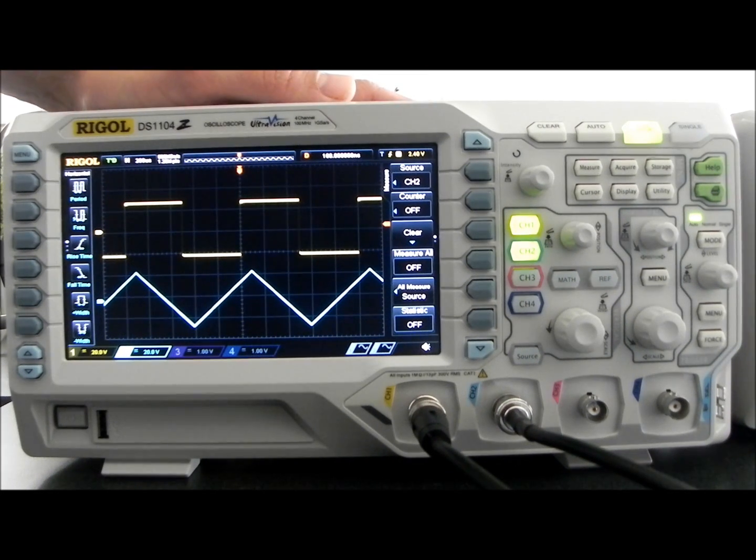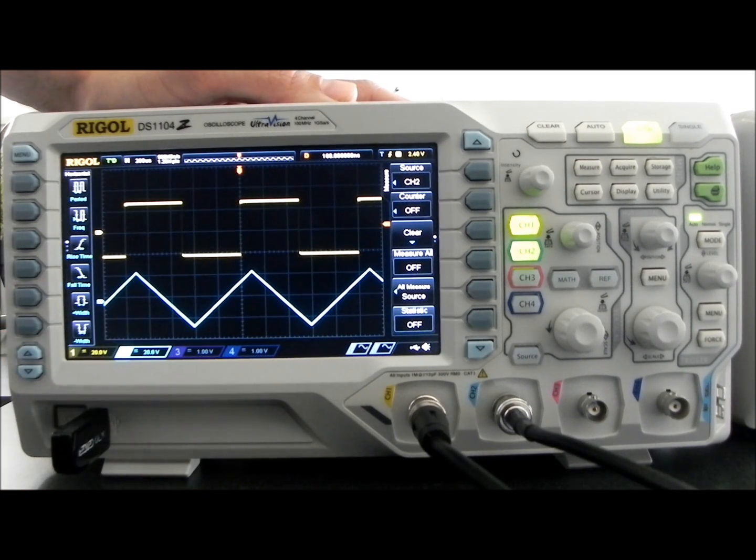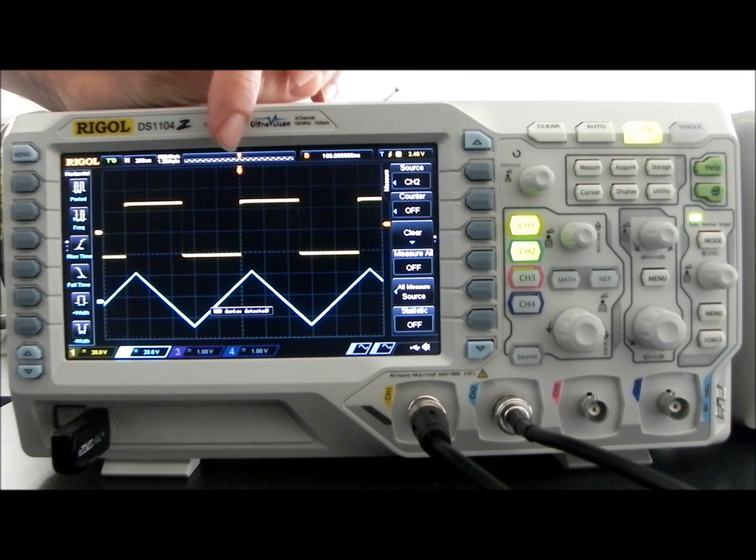So here I've got a DS1104Z. I'm going to take a formatted USB stick, this is FAT32 format, put that into the front panel and it's going to be recognized by the operating system.